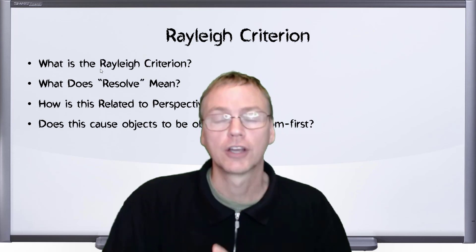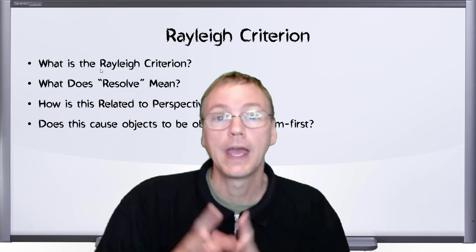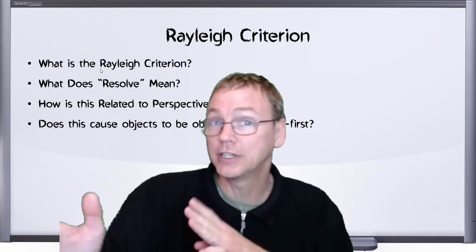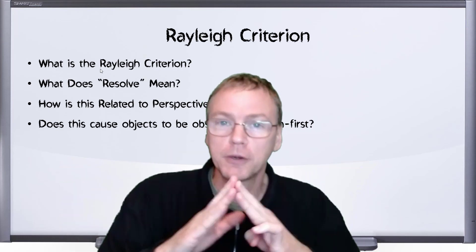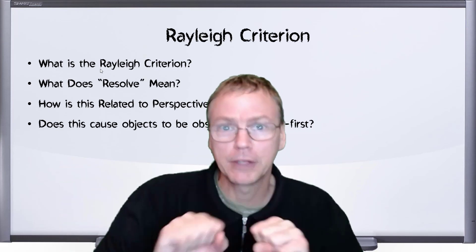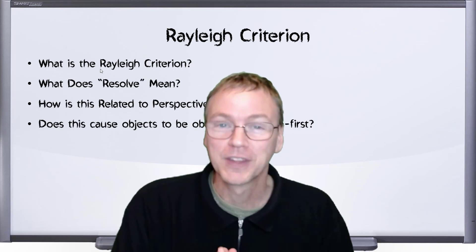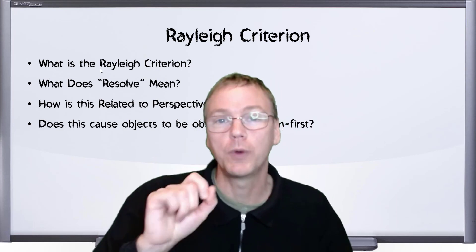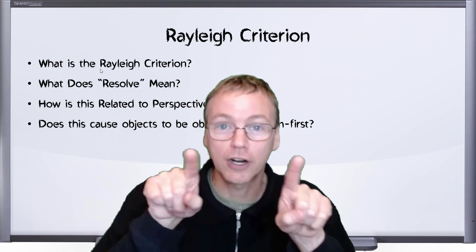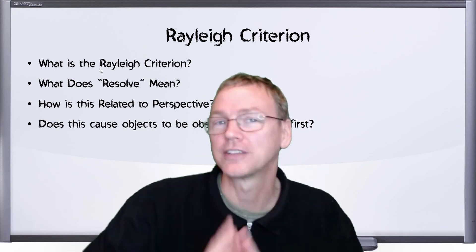This diffraction causes an interference pattern that causes the light from different objects to interfere with each other and blur. They sort of blur into each other. The Rayleigh Criterion itself gives us an angle at which the two different objects are so blurred together that you can't tell them apart.